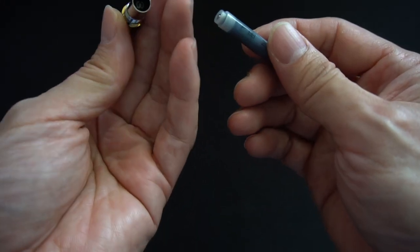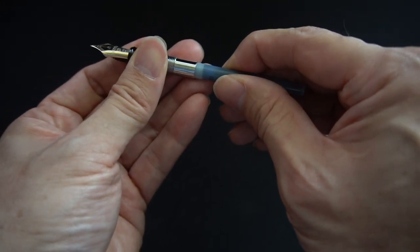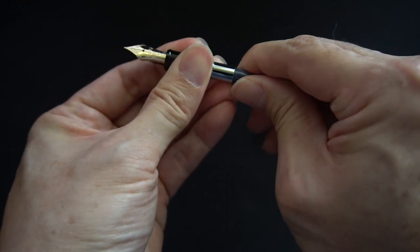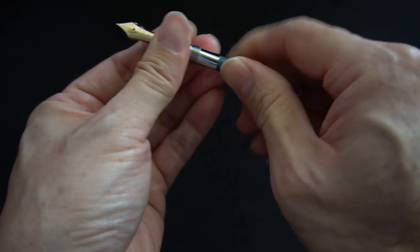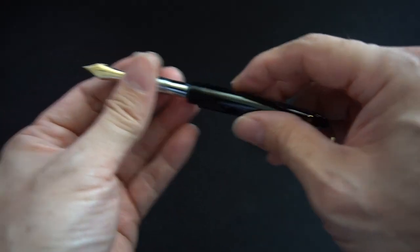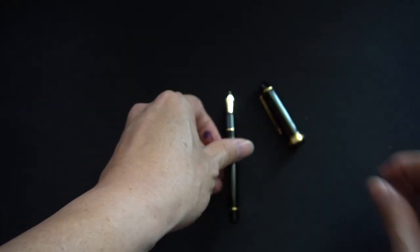So I'm gonna pop the cartridge, yeah the cartridge, into the pen because I do not have the Platinum converter. I'm not even gonna rinse it out or anything like that, so I'm just gonna pop it in straight. I think it's in, you can definitely feel the resistance, at least I hope it's in. And let's try a little bit of writing.